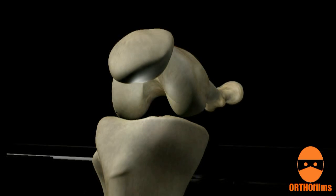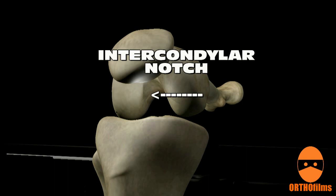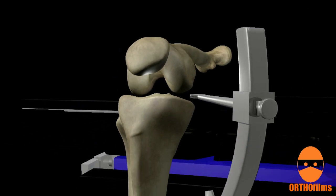The intercondylar notch, the site at which the new ACL graft will attach to the femur, is prepared. Tunnels are drilled in the tibia and femur.